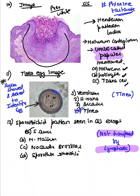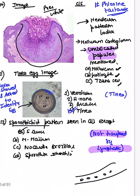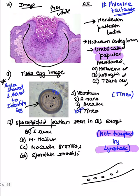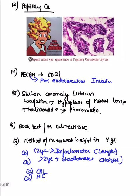The next question asked which organism is not transmitted by the lymphatic route — meaning the sporotrichoid pattern, where lesions spread along lymphatics. Options included Mycobacterium marinum (swimming pool granuloma), Nocardia, Sporothrix — but Staphylococcus aureus does not cause this pattern; it causes botryomycosis.